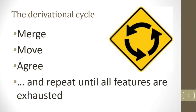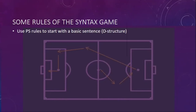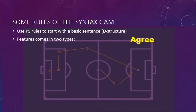First we use phrase structure rules to start with a basic sentence — we call that D-structure — which might look like a syntactic tree. The process of putting constituents together to create a more complex tree is called merge. Inside the constituents there are features, which come in two main types. Interpretable features, marked with a little i, can remain in the derivation — things like interpretable tense, interpretable person, interpretable number.